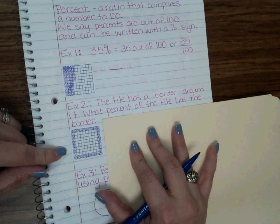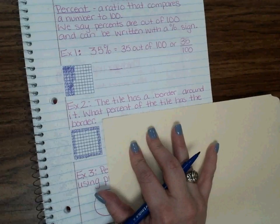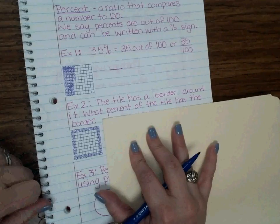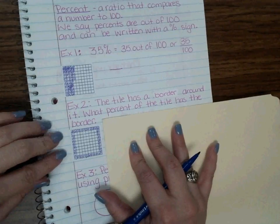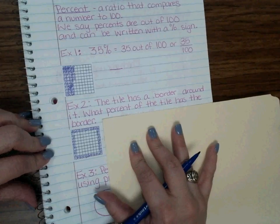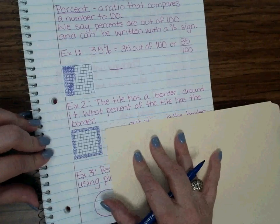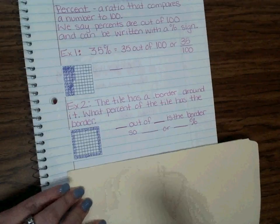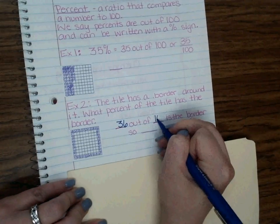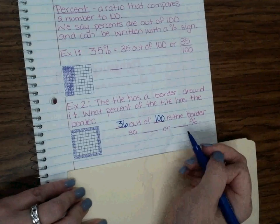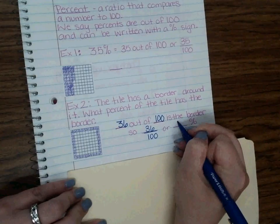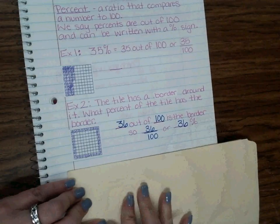I think there are 36 tiles. 36 of these tiles out of 100 are shaded in. So what would our percentage be? 36 tiles out of 100 would be 36 hundredths. That would be 36 percent. Very good. So we're going to go ahead and write that. 36 out of 100 is the border. So 36 hundredths or 36 percent. Pretty easy so far.